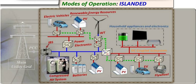Grid Connected Operations refer to the standard mode of operation for most power generation systems and consumers. In a grid-connected setup, power generation sources such as power plants or renewable energy sources like solar and wind are connected to an interconnected network of power transmission and distribution lines called the electrical grid. Consumers such as homes, businesses, and industries are also connected to this grid.